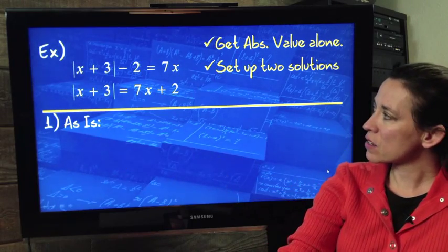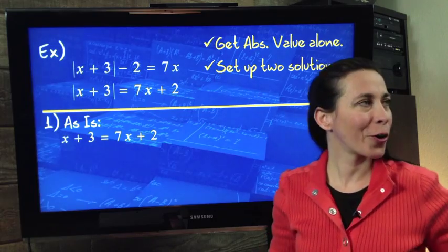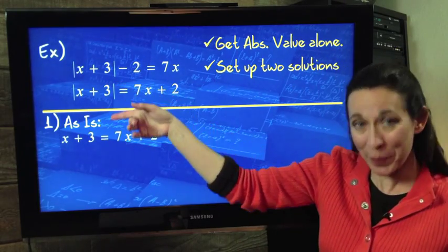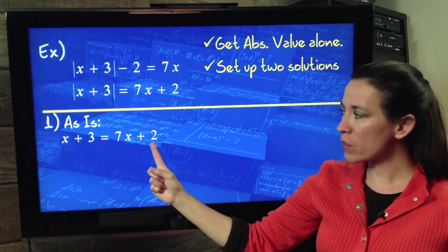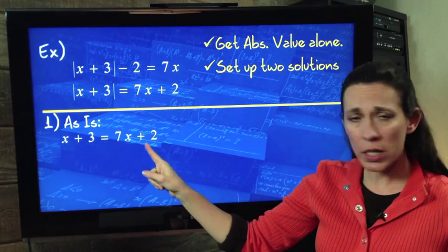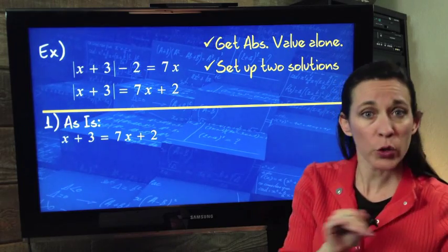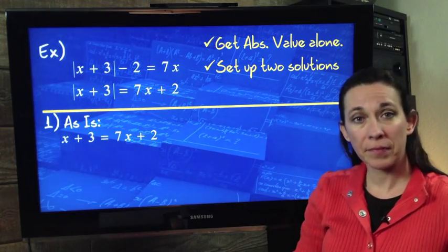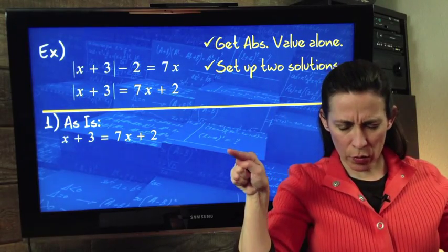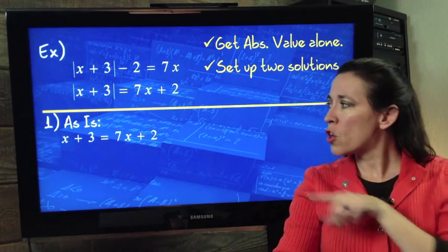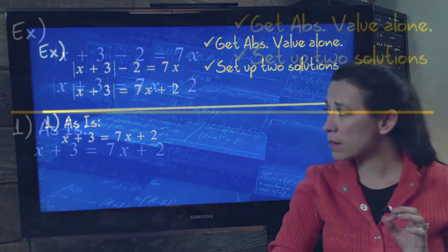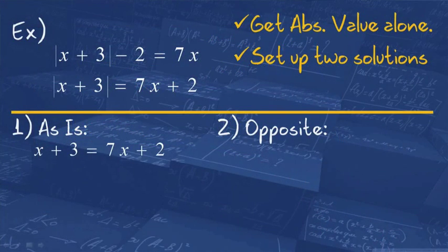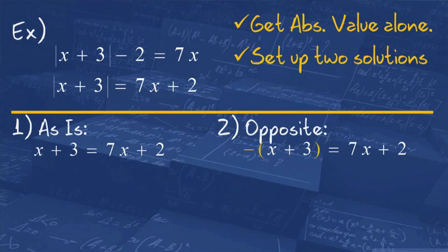Now we're going to set up our two different solutions. One of them, the inside is as is. So imagine just dropping your absolute value, and you have this first equation. Be careful. If this is all you put, I doubt if your teacher gives you partial credit. The reason is, if this is all you do, then you're saying the absolute value doesn't mean anything. Just get rid of it. So you have to remember, distance from zero. There's always two numbers that have a distance from zero. One's on the positive side, one's on the negative side. So you're showing the inside as is or positive. Now you have to show the opposite possible answer. So we're going to distribute a negative 1 to everybody that was inside that absolute value.